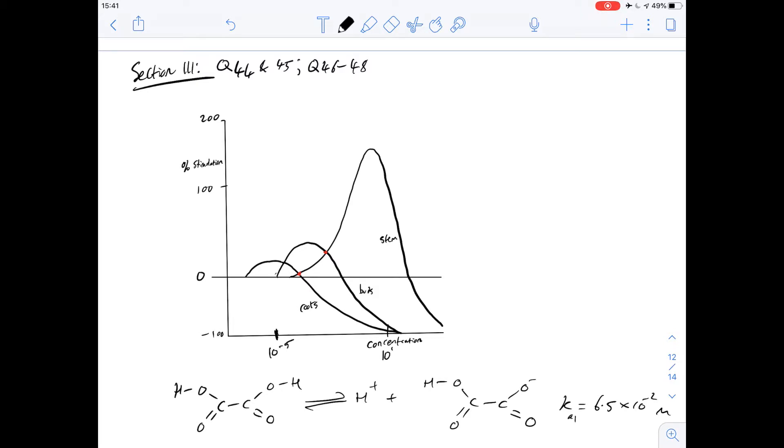Questions 44 and 45 are about auxin. I've copied out the diagram here and I've drawn on a couple of points where the lines cross because the first question asks which of the following propositions is most supported by the figure in relation to externally applied auxin concentrations between these two values, and it says about whether or not there are points at which the root stimulation are equal to each other.